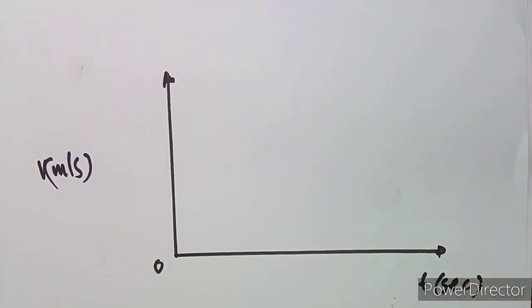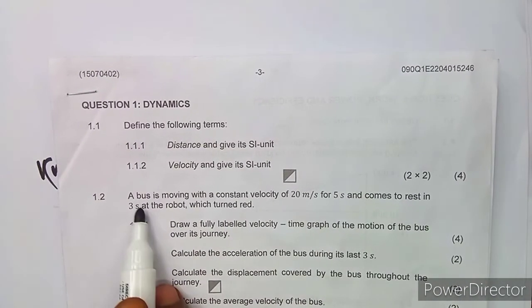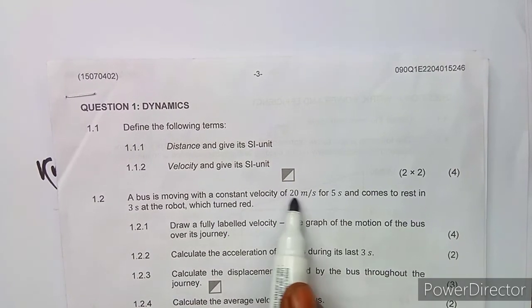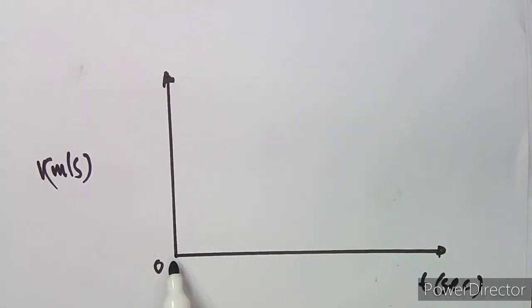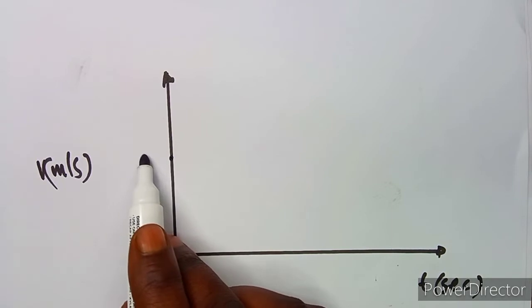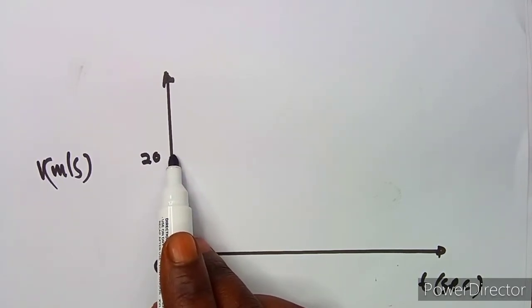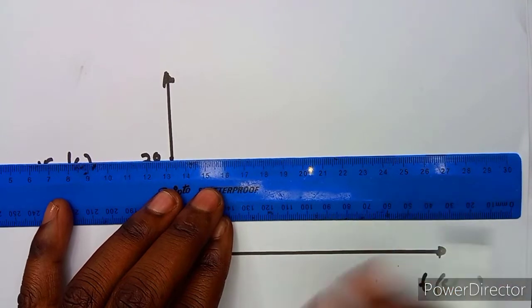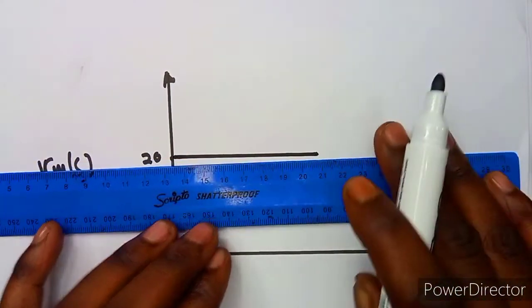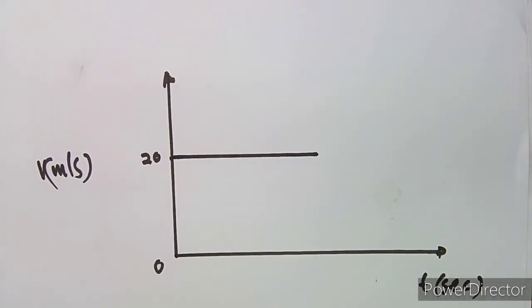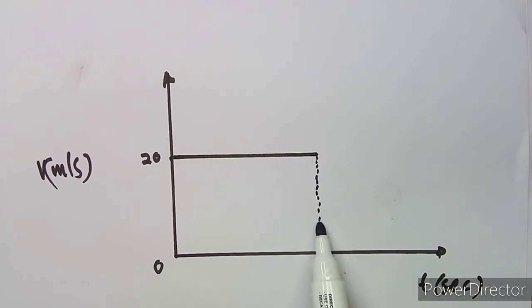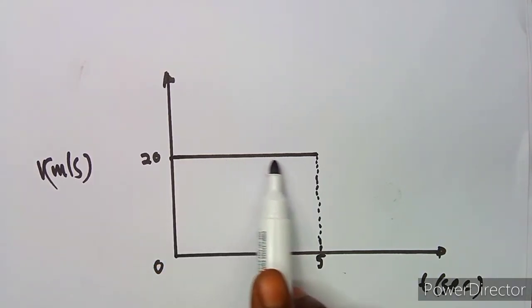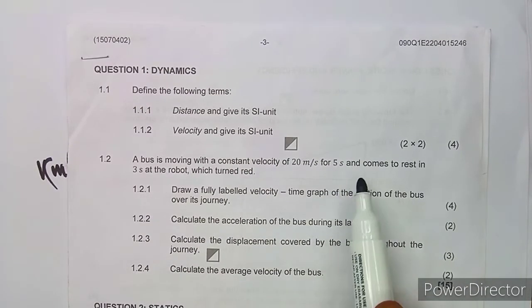The first part shows a bus moving with a constant velocity, so it already has a velocity of 20 m/s. Since it's constant, it's going to maintain this value — a straight horizontal line at 20. This is maintained for five seconds, so this corresponds with a time value of five. When velocity is constant, the graph is a straight horizontal line.